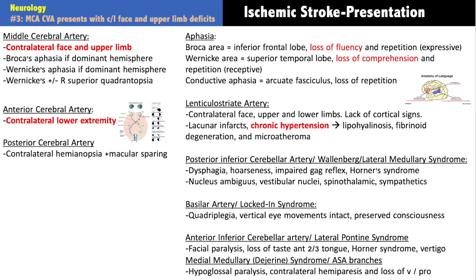For lateral pontine syndrome: facial paralysis, loss of taste in the anterior two-thirds of the tongue, Horner syndrome, vertigo, and possibly ataxia from spinocerebellar involvement and loss of pain/temperature from spinothalamic involvement. The key localizing clue is facial paralysis with loss of taste in the anterior two-thirds — cranial nerve seven is lateral in the pons (12 doesn't divide evenly into 7). Hyperacusis also points to cranial nerve seven.